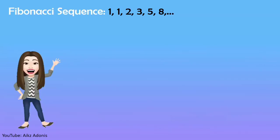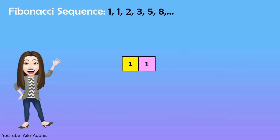The Fibonacci sequence is a wonderful series of numbers that could start with 0 or 1. Let's visualize these numbers using square tiles. I will start with a 1 by 1 square, then another. Together, they will form a 1 by 2 rectangle. Above that, a 2 by 2 square.